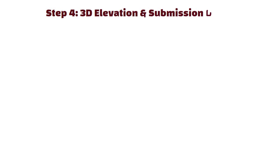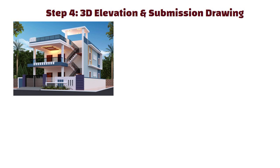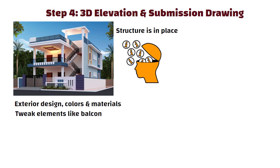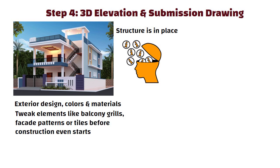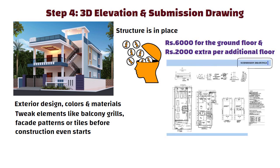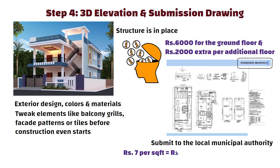Step 4: 3D Elevation and Submission Drawing. Now that the structure is in place, it's time to visualize your home. The 3D elevation helps you see the exterior design, colors and materials, so you can tweak elements like balcony grills, façade patterns or tiles before construction even starts. The cost is 6,000 rupees for the ground floor and 2,000 rupees extra per additional floor. Along with that, you will need a submission drawing — this is what you submit to the local municipal authority to get your plan approved. The cost is about 7 rupees per square feet, so 7,000 rupees for a 1,000 square feet house.